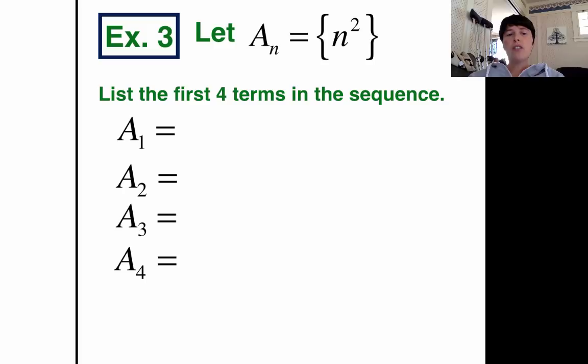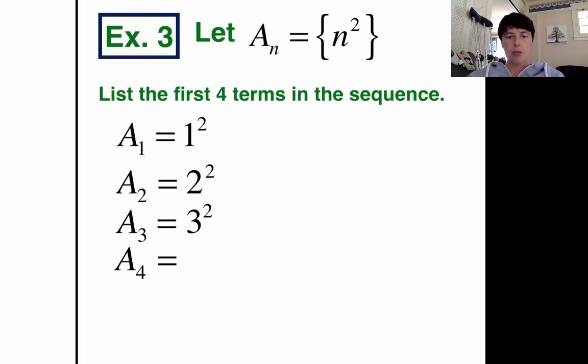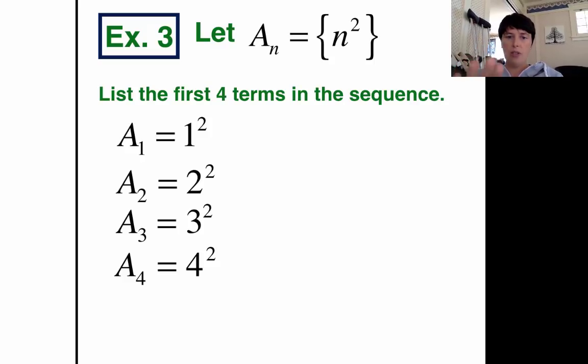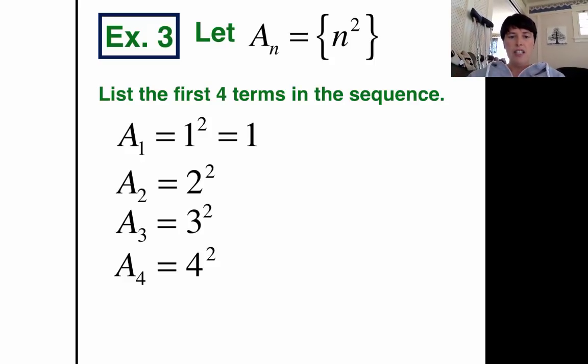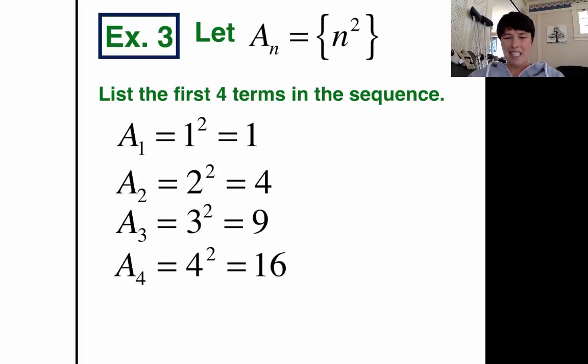n squared is our equation. So that means pretty easy math here. We're going to do 1 squared, 2 squared, 3 squared, and 4 squared. 1 squared - don't say it's 2. It's 1 times 1 is 1. Some people like to say 2 on accident. 2 squared: 2 times 2 is 4. 3 squared: 3 times 3 is 9. 4 squared: 4 times 4 is 16. There's our sequence: 1, 4, 9, 16.